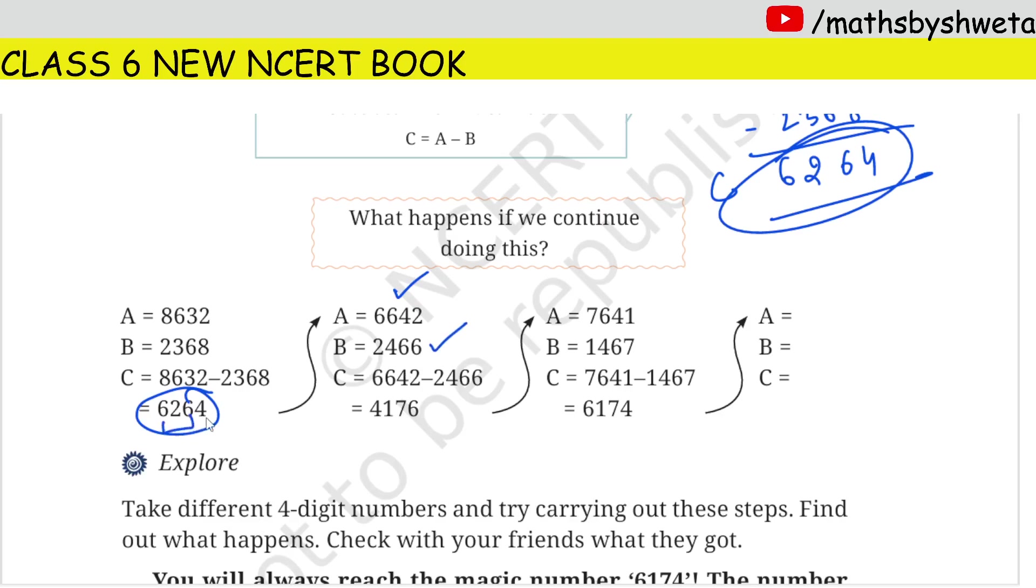The largest number will be 6642, the smallest will be 2466, then subtract it again. The largest number minus smallest, then answer again, then again. The largest number will be 7641, the smallest number is 1467, then subtract it again.